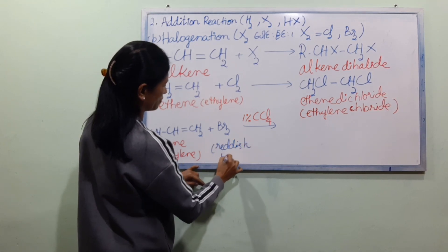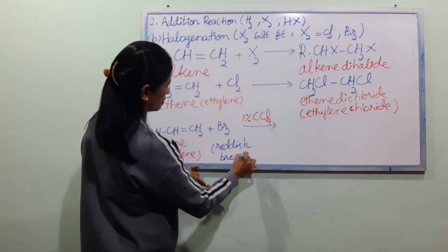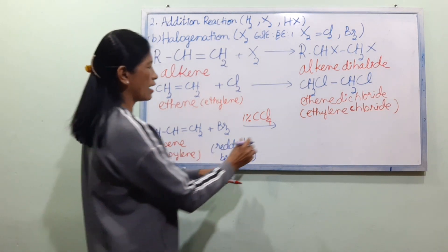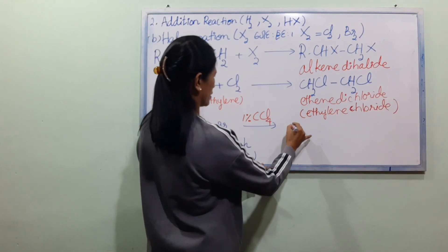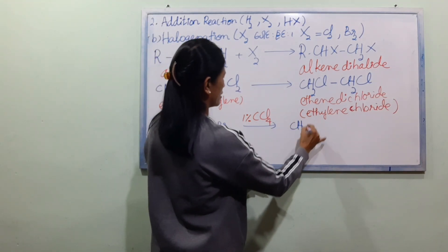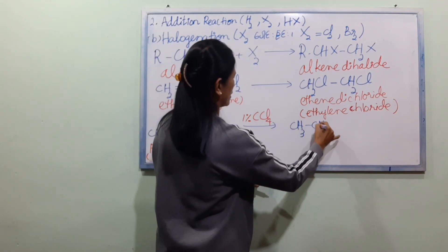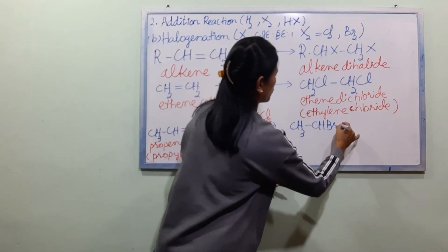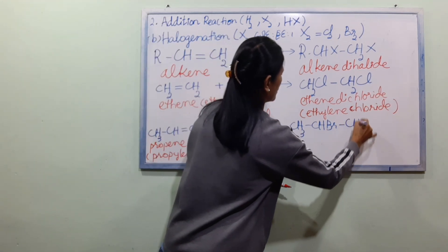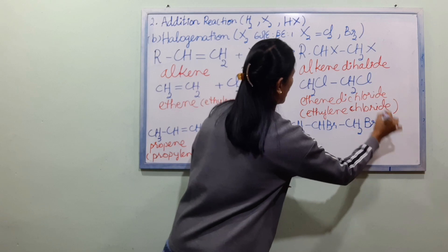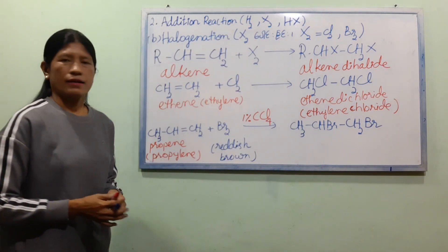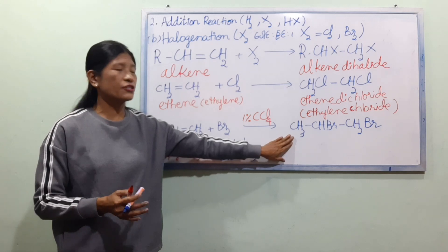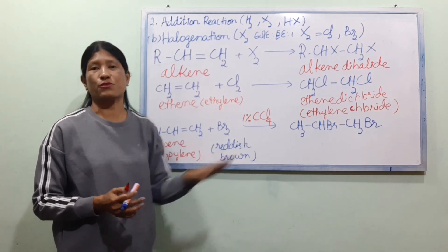Reddish brown. This is what we need. We need to add CH3CHBR. We need to add CH2BR. We need to add CH3CHBR.